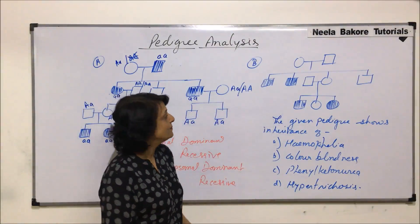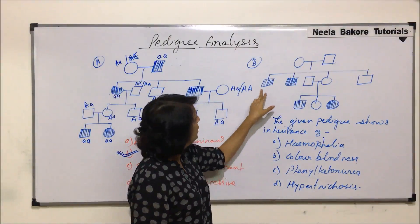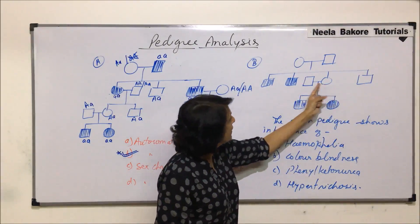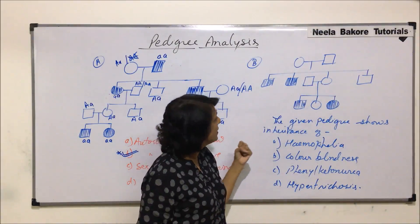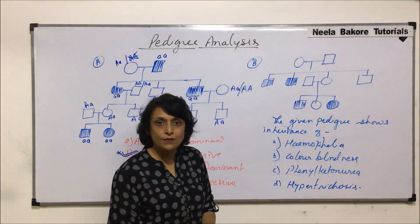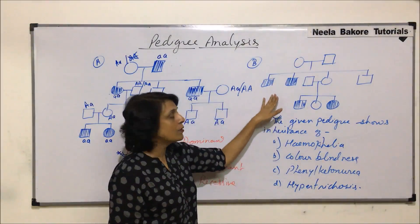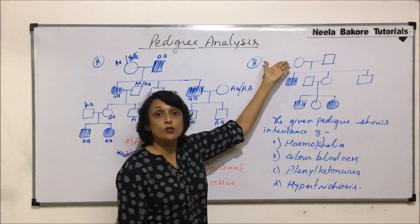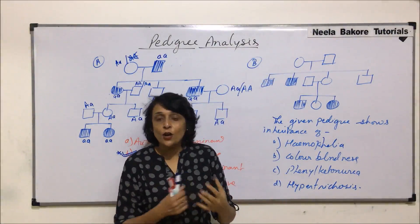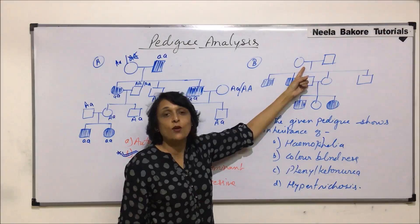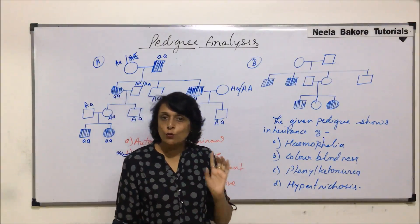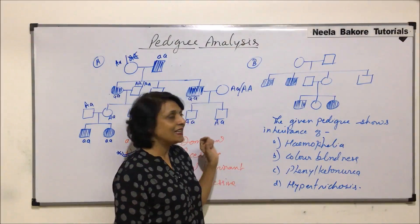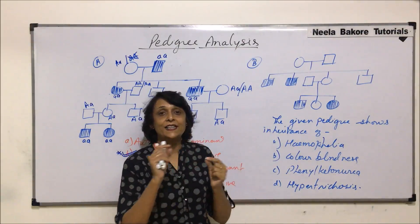Now for the second pedigree: the parents are not showing the trait, but two sons are affected. One daughter and one son are unaffected. When that unaffected daughter marries a normal man, one son and one daughter among her children are also showing the trait. Again, since parents do not show it, it cannot be a dominant inheritance.